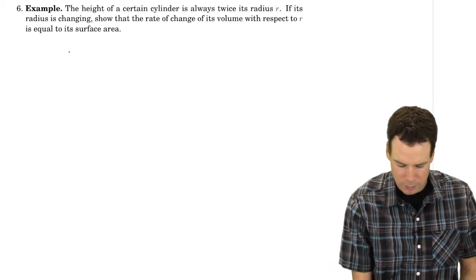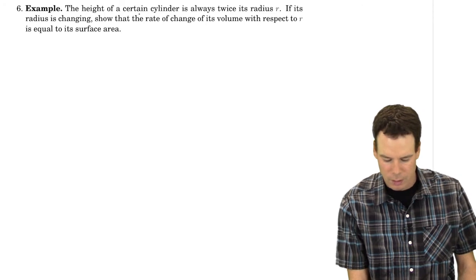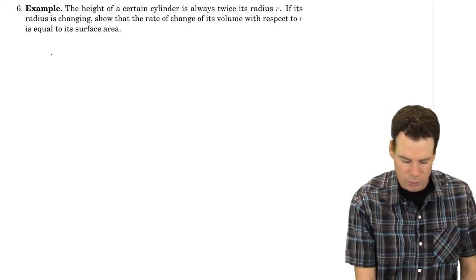In our last example, we look at a problem in geometry. Here, the height of a certain cylinder is always twice its radius.